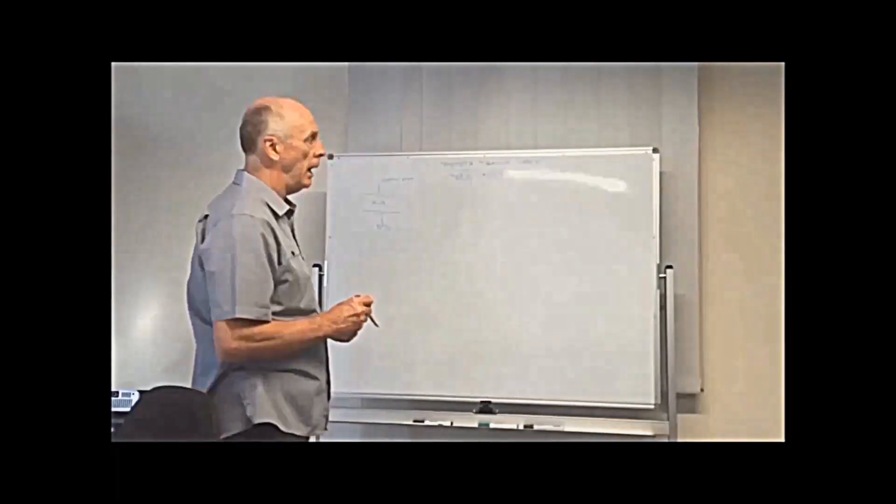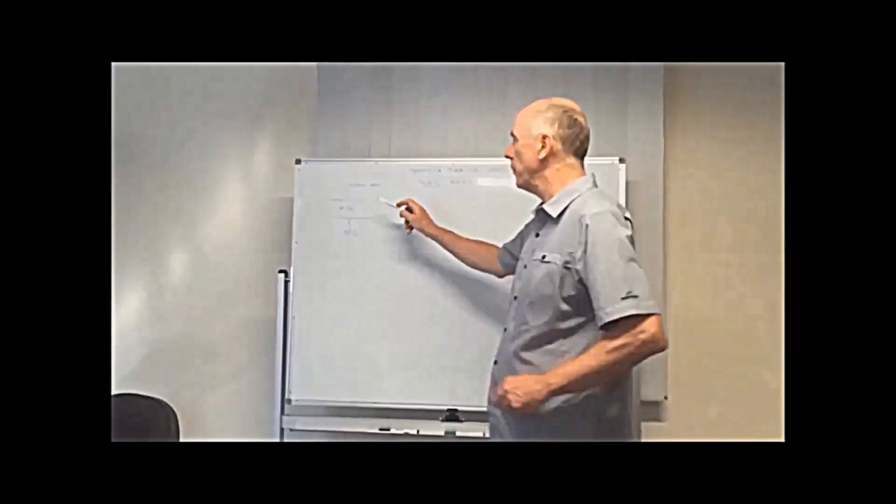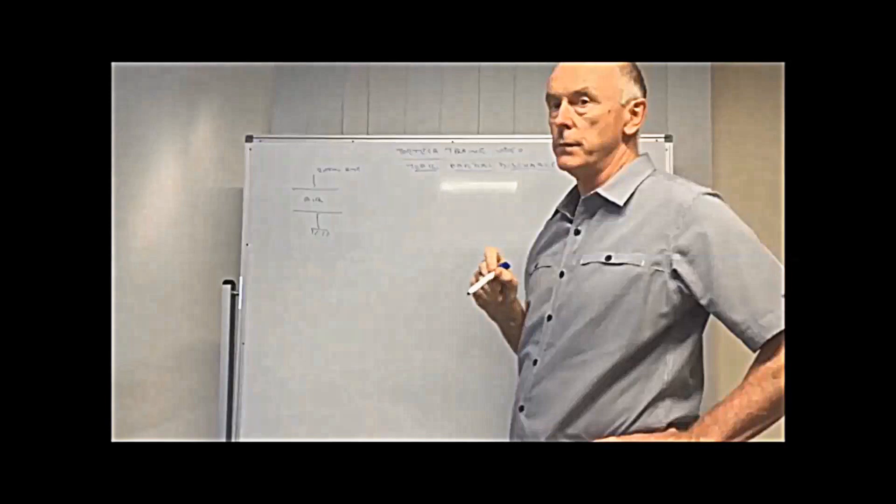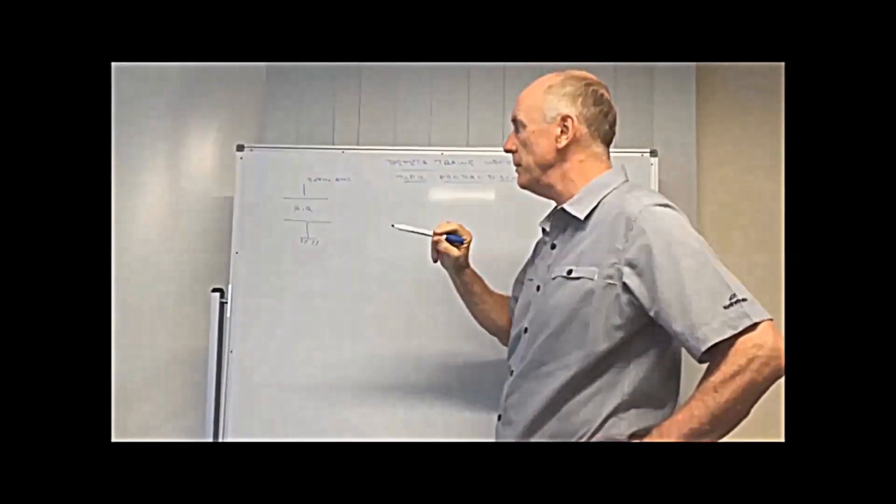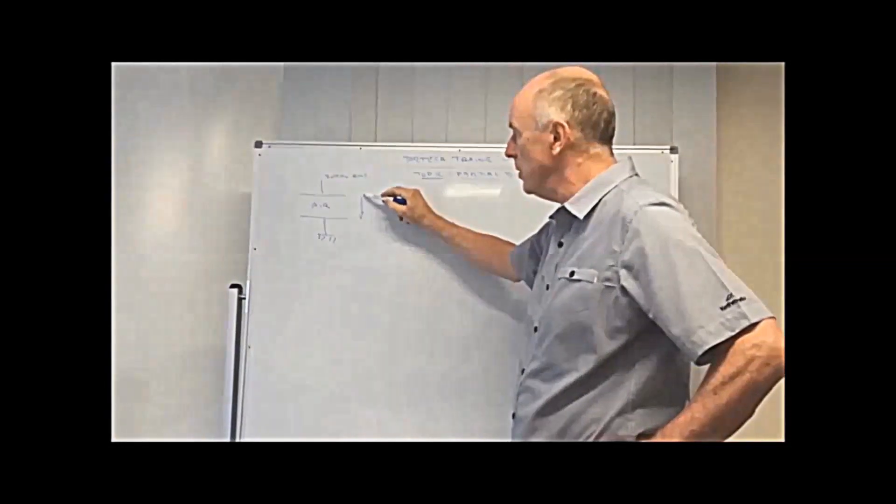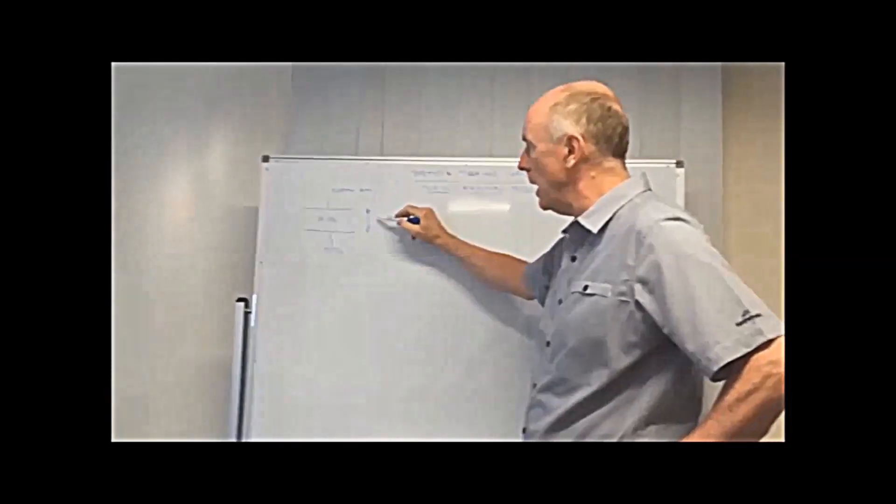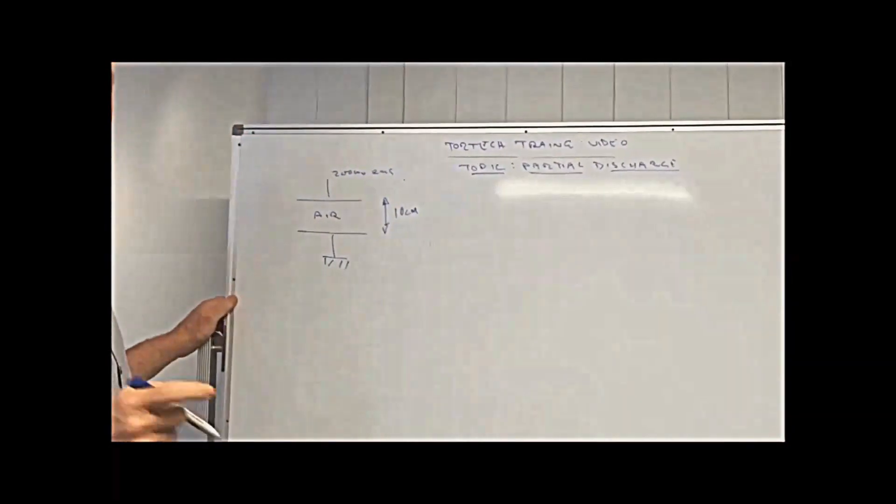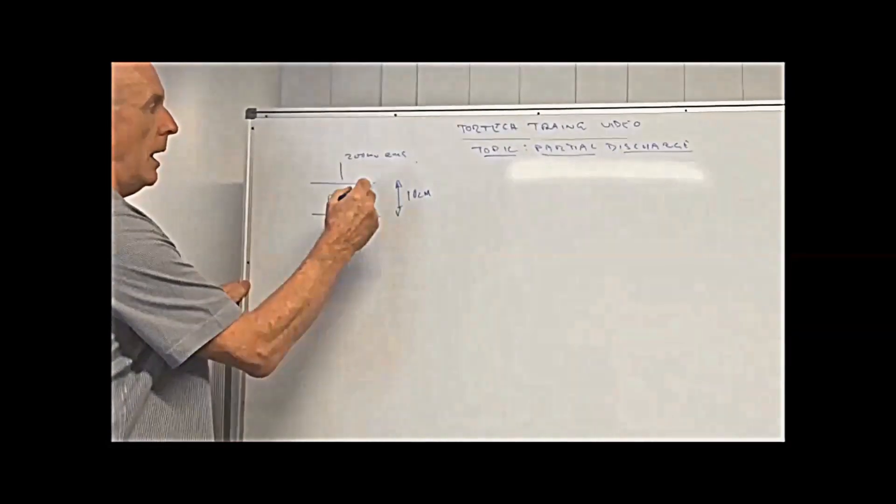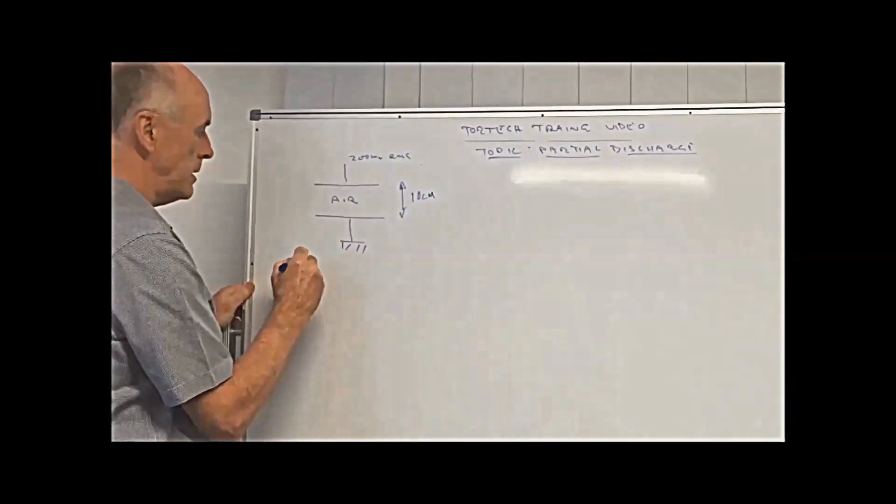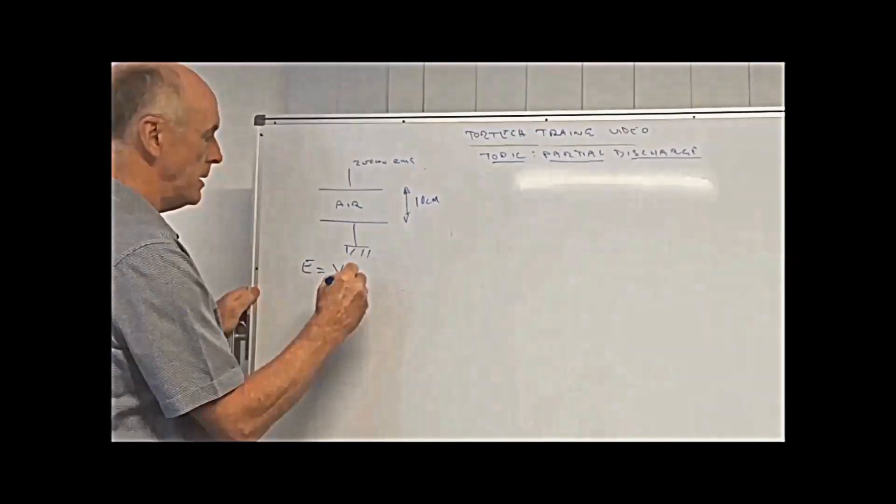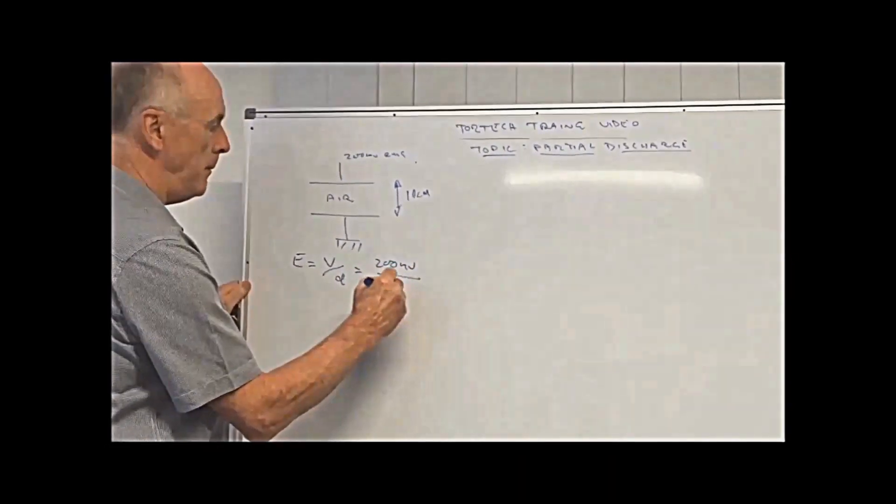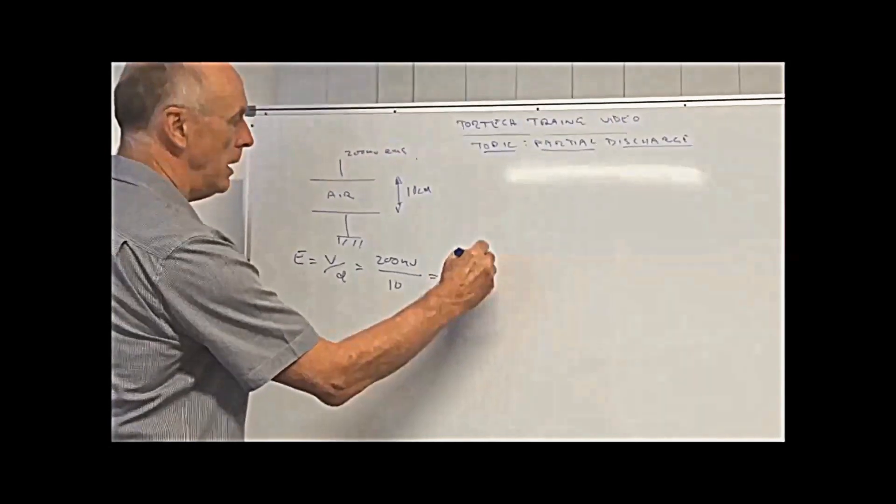To start with, what we'll talk about is two parallel plates with 200 kV between the air. We've got an air insulation medium here, and the distance between the two plates is 10 centimeters. So with a 10 centimeter gap across air, the stress, which is voltage divided by distance, will be 200 kV divided by 10, which gives you 20 kV per centimeter.